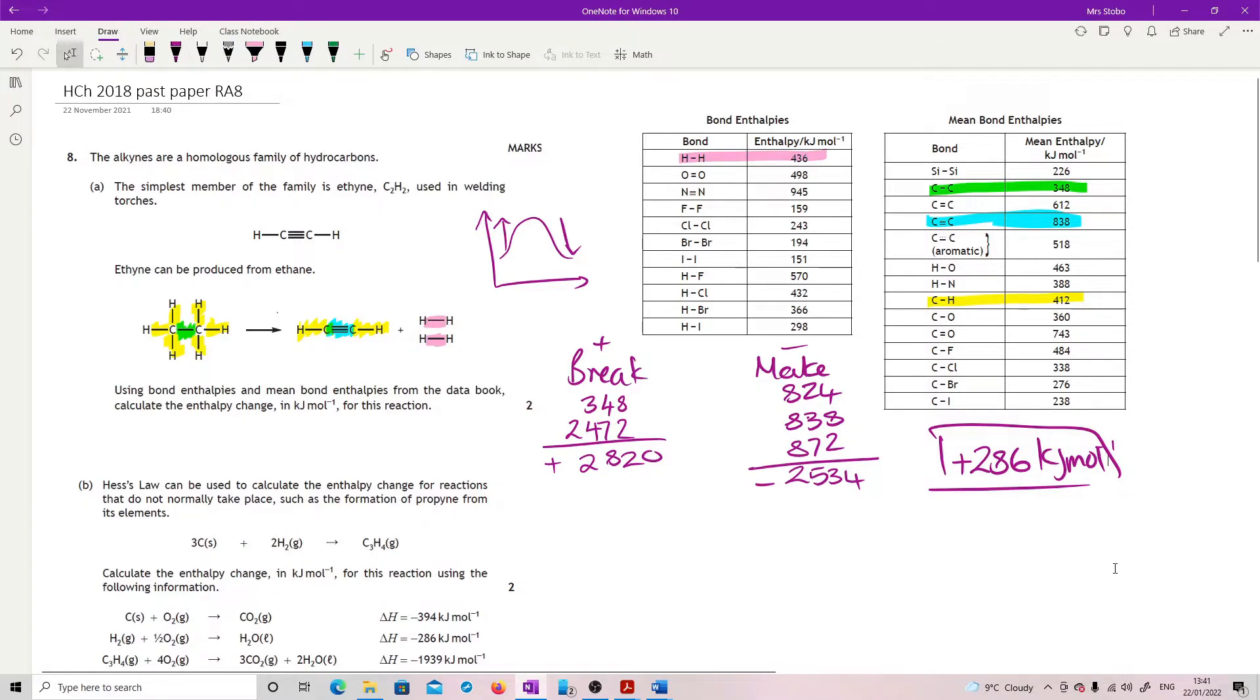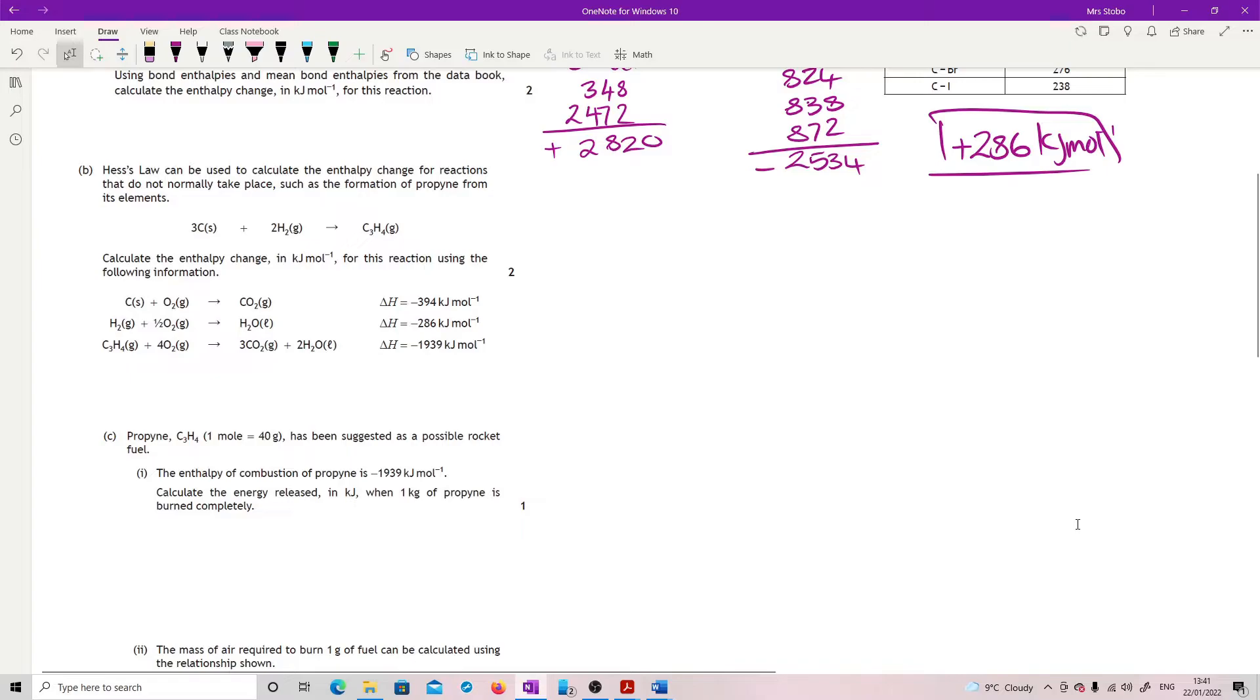Right. Hess's law question. Calculating the enthalpy change for reactions that do not normally take place, such as formation of propine from its elements. So that's why Hess is useful. Calculate the enthalpy change in kilojoules per mole for this reaction using the following information. You have your data equation, you have your target equations, and then you've just got to run Hess. So I'll do it both ways. Let's start with algebraic. So delta H, this is my delta H question mark that I want to find out. I've got my ABC.